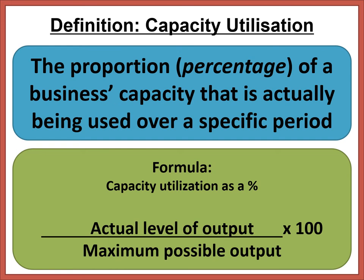Capacity utilization is the proportion — expressed as a percentage — of the business's capacity that is actually being used over a specific period. The formula is: actual level of output divided by the maximum possible output, multiplied by 100. So you are finding the percentage that a business is actually working at.